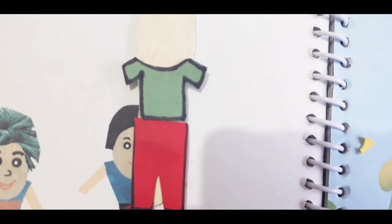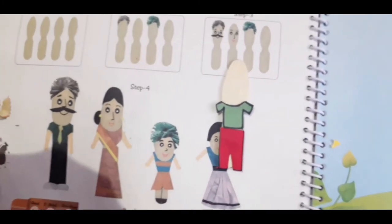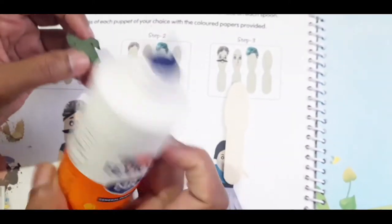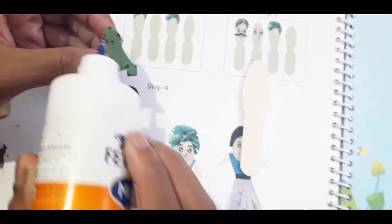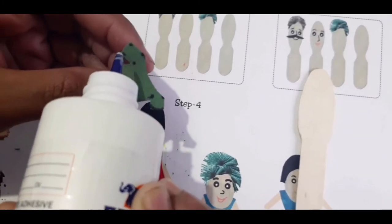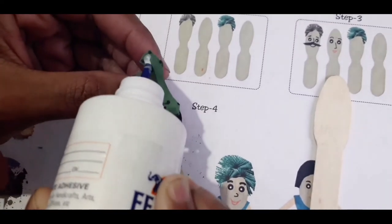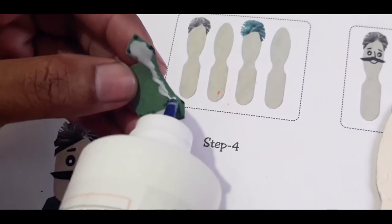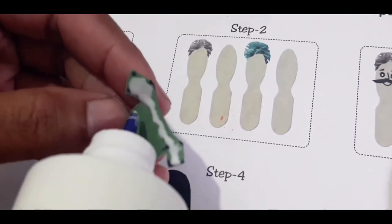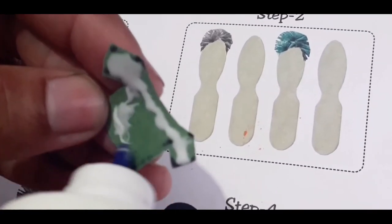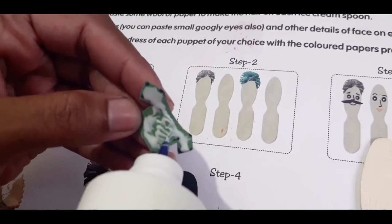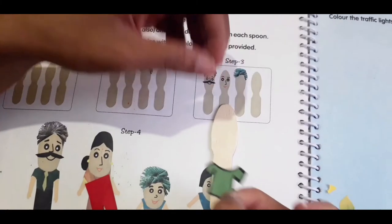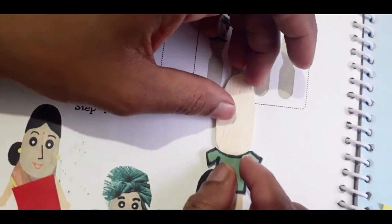Now we'll take the Fevicol. It is not compulsory to make with craft paper children, okay. You can directly make on the spoon also. It's your own imagination, your creativity. However you can make, it's not compulsory that what teacher is making that only you have to make. You can use your own creativity. Now I am going to stick the shirt.